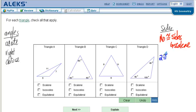If we have two congruent sides, we call that isosceles. And if we have three congruent sides, we call that equilateral.